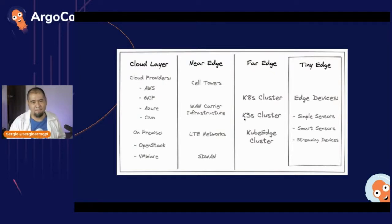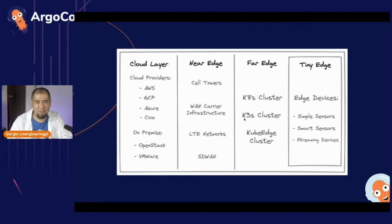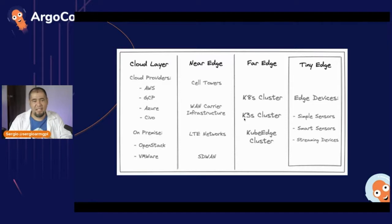I am working on a book, and this is an extraction of some diagrams I've used there. Edge computing has different layers. We are pretty comfortable using the cloud layer, where you find AWS, GCP, Azure, or maybe Civo Cloud using K3S, or a private cloud using OpenStack or VMware. In the near edge layer, you find devices working with LTE networks and protocols that smartphones use — something more related to telecommunications.